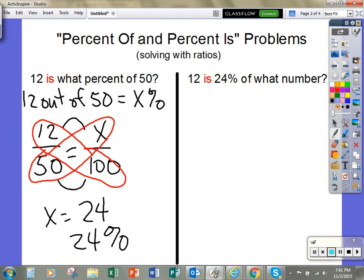Now, this is the same problem written in a different format. And again, I'm going to rewrite it. 12 out of some number is 24 percent.